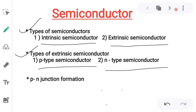In the previous session we discussed classification of elements on the basis of conductivity and on the basis of energy band — valence band, conduction band, energy band gap. For a conductor, energy gap is zero; for a semiconductor, less than three electron volts; for an insulator, greater than three electron volts. We also discussed the effect of temperature on a semiconductor and generation and recombination of electron-hole pairs.